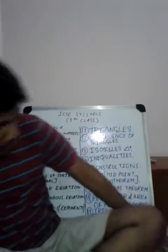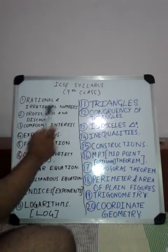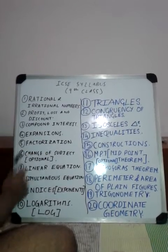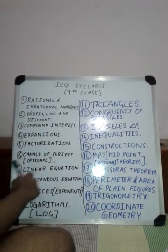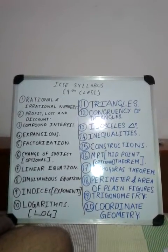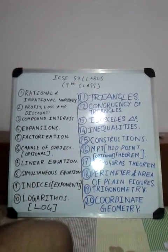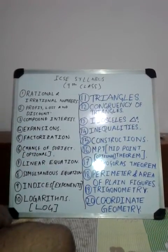In this video I will discuss the ICSE curriculum of class 9 which I will cover. The first chapter is rational and irrational numbers, second is profit and loss and discount, third is compound interest, fourth is expansions, then factorization, and change of subject — I've marked that optional because many schools do not do this chapter as it is a very basic chapter.